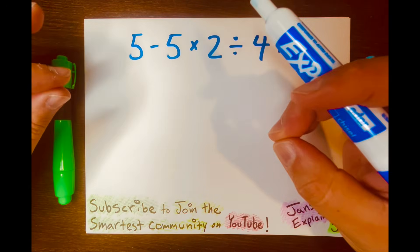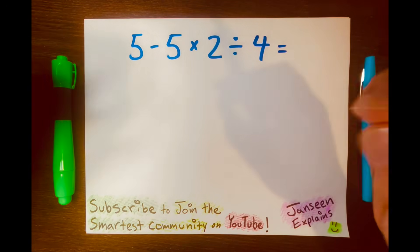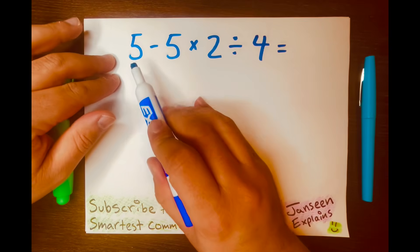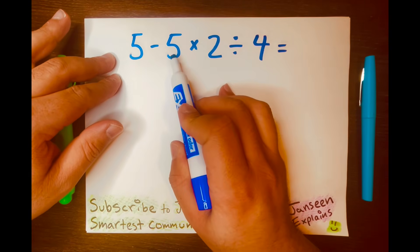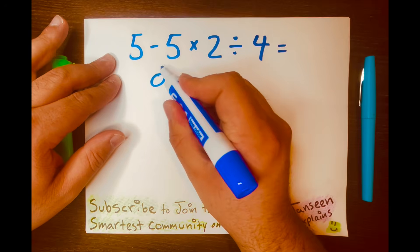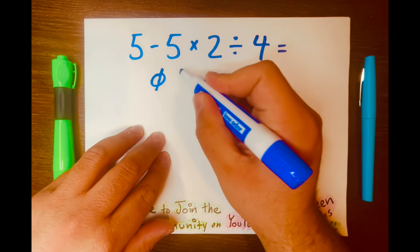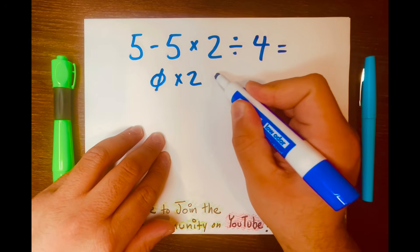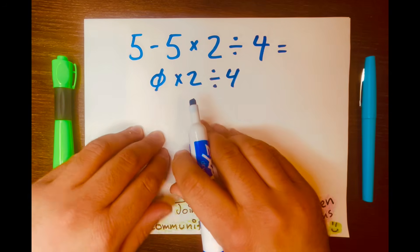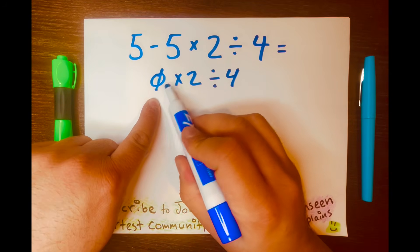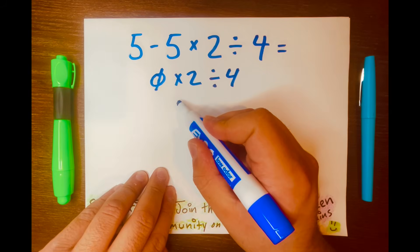Hi everyone, some people will solve this math problem so wrong. They'll subtract 5 minus 5, which is 0, so they'll write 0, then bring down the times 2, the division symbol down, and then the 4 down, and then they'll multiply 0 times 2, which equals 0.